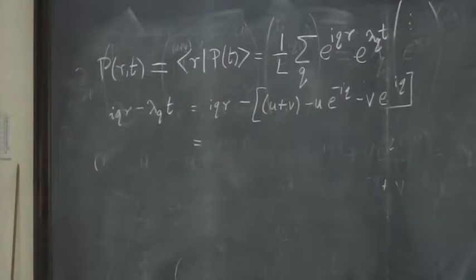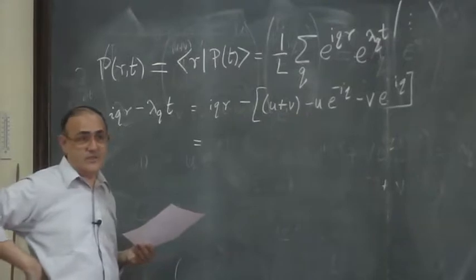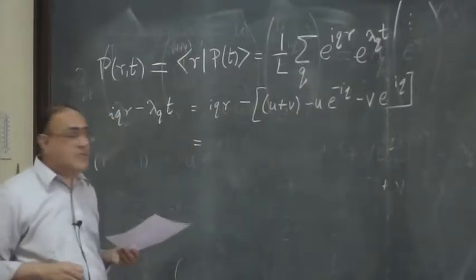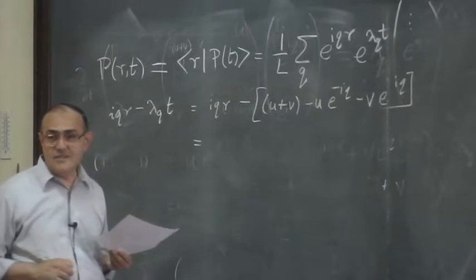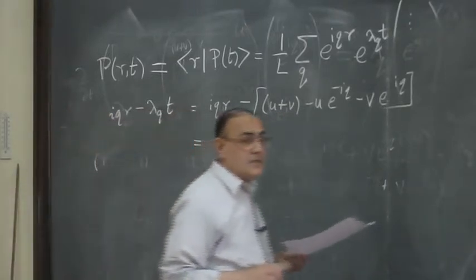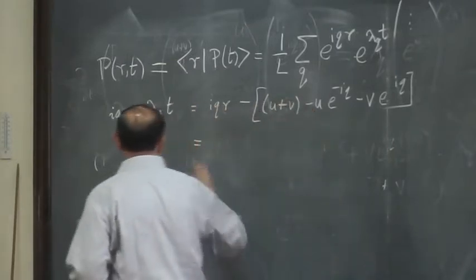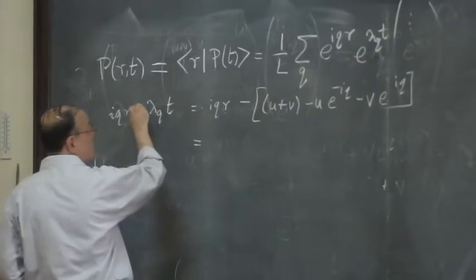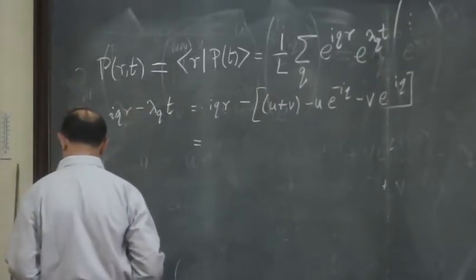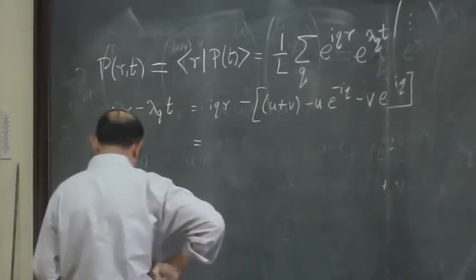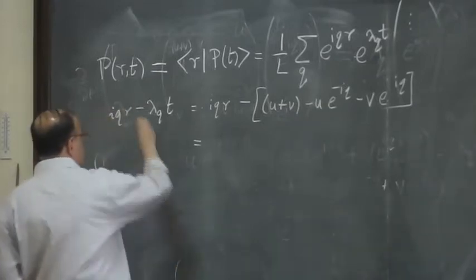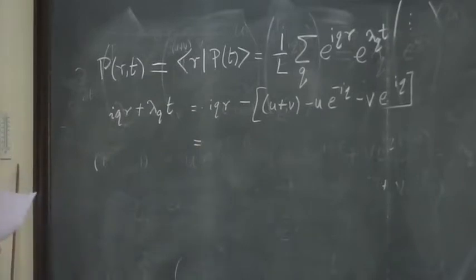So this is easy. This is iqr minus, let's plug in: (1 - u - v) minus u times e^(-iq) minus v times e^(iq) times t. Now you use your formulas. e^(iq) equals cos q plus i sin q. What is e^(iq) plus e^(-iq)? What is e^(iq) minus e^(-iq)? You are right. This is plus and this is minus.